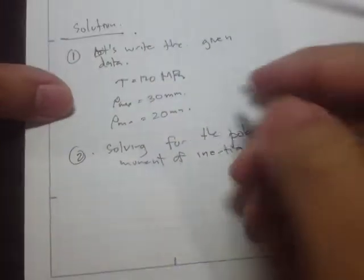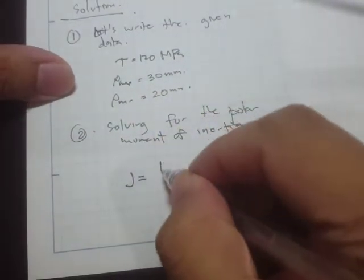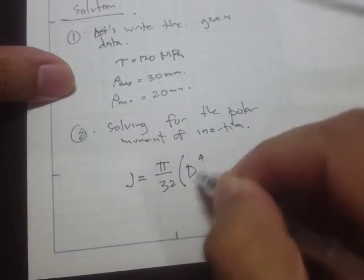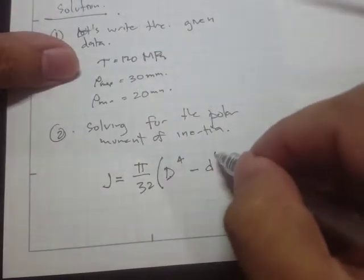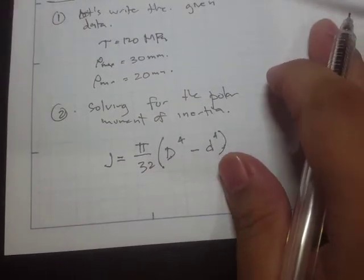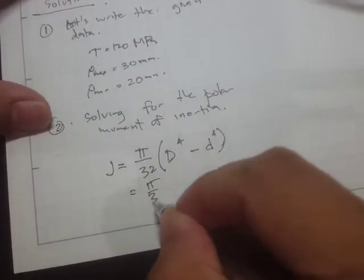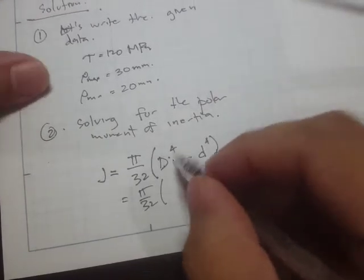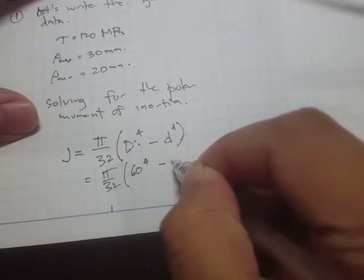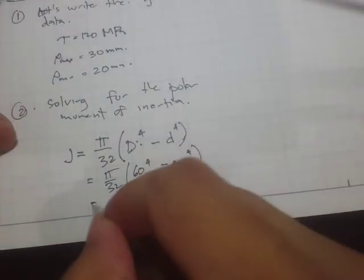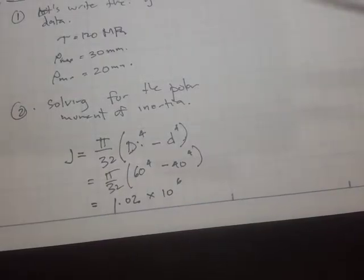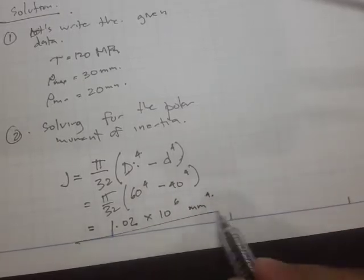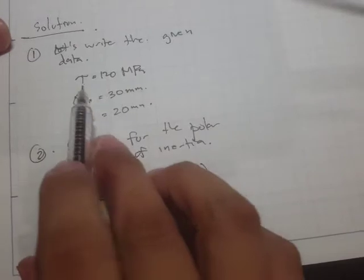We have a hollow section, and the polar moment of inertia is pi over 32 times (D to the 4th minus d to the 4th), where D is the outer diameter and d is the inner diameter. Substituting the values — 60 to the 4th minus 40 to the 4th — we get 1.02 times 10 to the 6 mm to the 4th. So we now have J, the radial distance, and the shear stress.